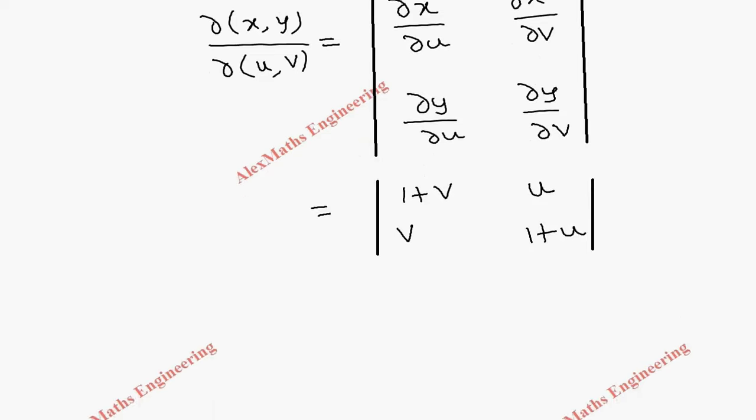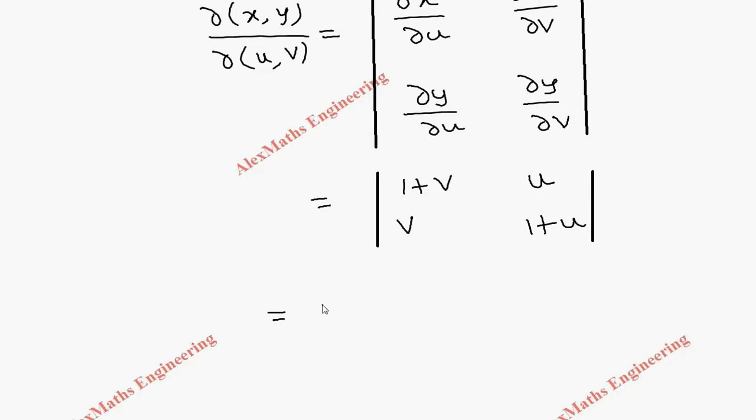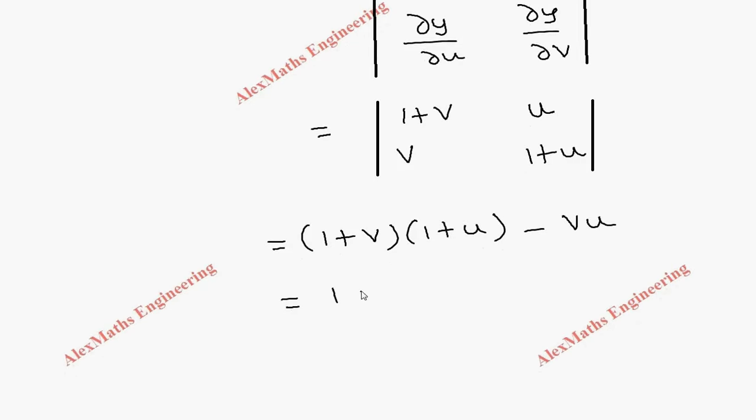First, multiply the leading diagonal: (1+v)(1+u), then minus vu. Expanding this gives 1+u+v+vu minus vu.